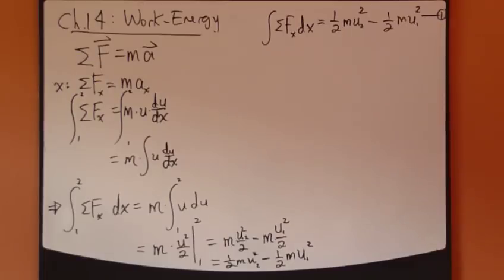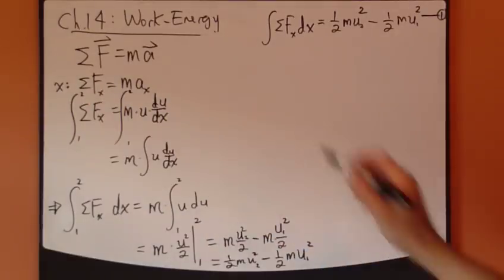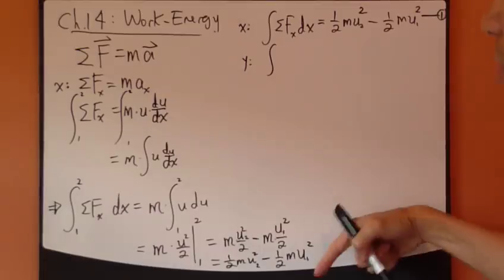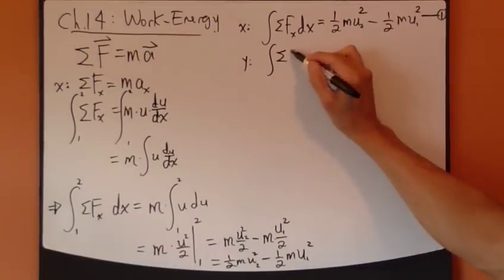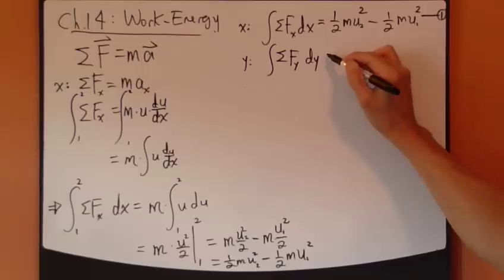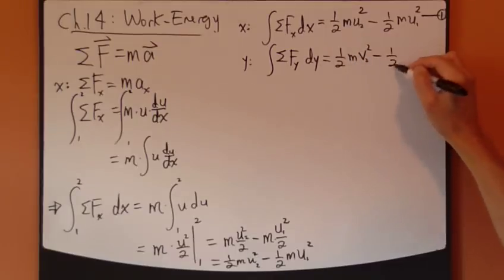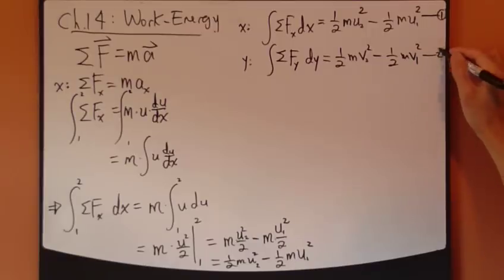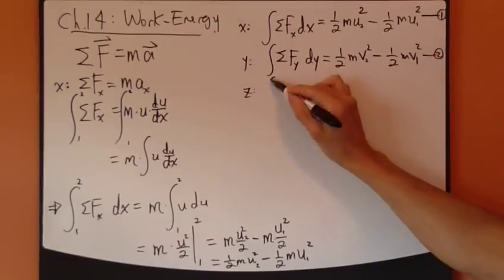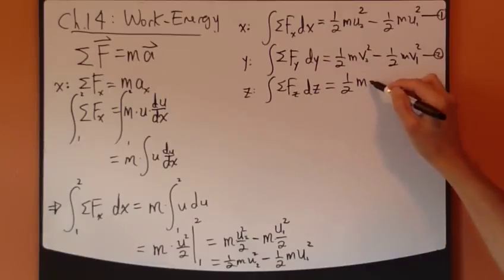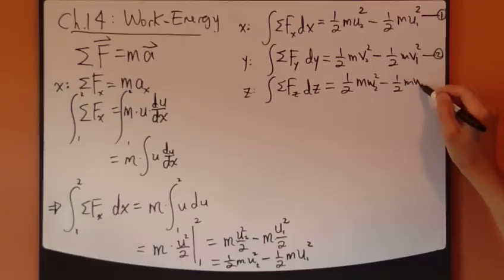Do the same thing for the y and v components. Y components, go through the exact same thing, apply the second law, integrate it. So, we have sum of forces in the y-direction equals one-half m v2 squared minus one-half m v1 squared. Equation 2. For the z-direction, equals one-half m w2 squared minus one-half m w1 squared. Equation 3.